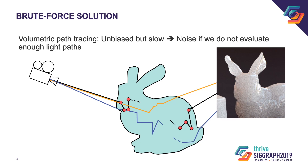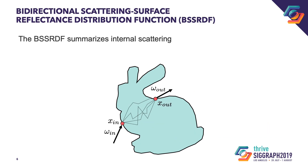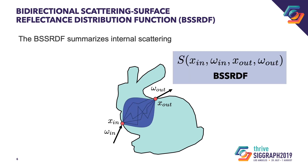Overall, using volumetric path tracing becomes quite expensive when rendering subsurface scattering. We can also look at subsurface scattering using the abstraction of the bidirectional scattering surface reflectance distribution function, or BSSRDF. For two points and incident directions, the BSSRDF quantifies how much radiance incident at one location will exit at the other location on the surface.